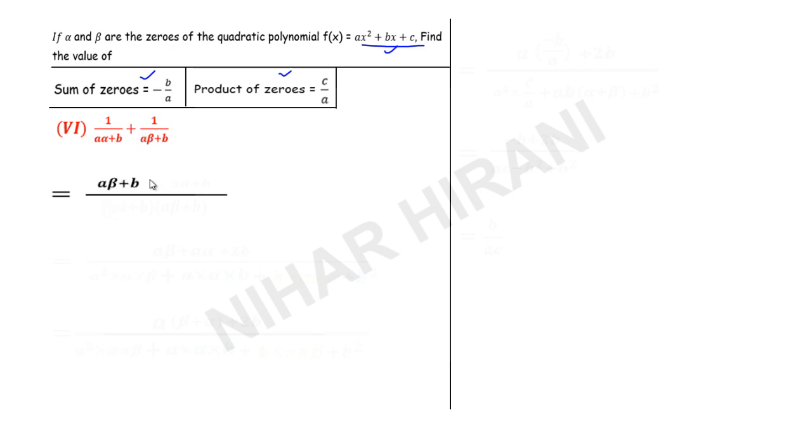This is plus, so I will write plus here, and this one will be multiplied with a alpha plus b. Here we have to be very careful with a and alpha, so a alpha plus b. My LCM will be a alpha plus b times a beta plus b.